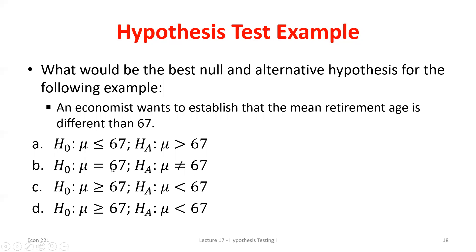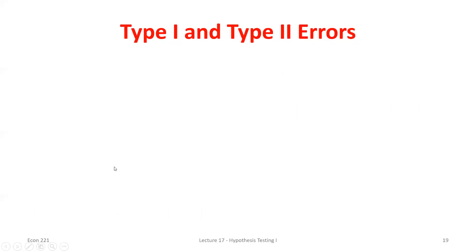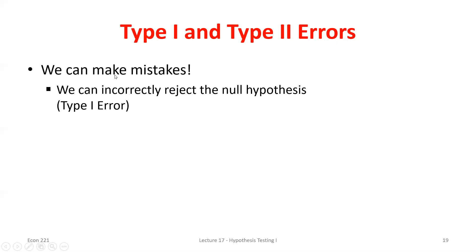Ultimately, we're trying to reject the null or fail to reject it based on sample evidence. Can we reject what we assumed to be true, or do we not have enough evidence? In that process, we can make mistakes — we'll incorrectly reject the null sometimes.